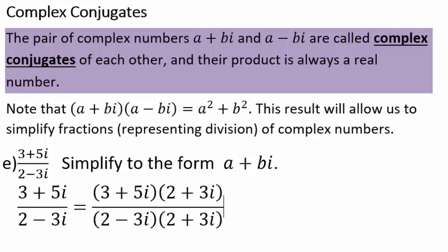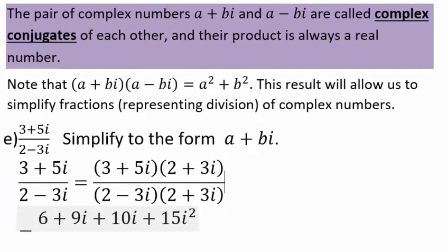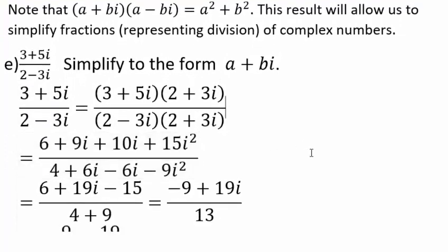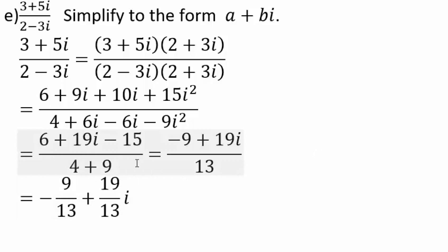For division of complex numbers, multiply numerator and denominator by the conjugate of the denominator. For example, multiplying by (2 + 3i)/(2 + 3i): the numerator gives 6 + 19i - 15, and the denominator gives 4 + 9 = 13, resulting in -9/13 + (19/13)i. This shows division of complex numbers results in another complex number. When addition, subtraction, multiplication, and division all stay within a set, that set is called closed under those operations.